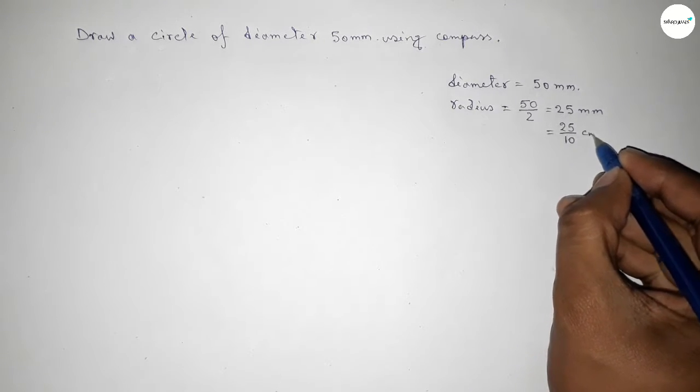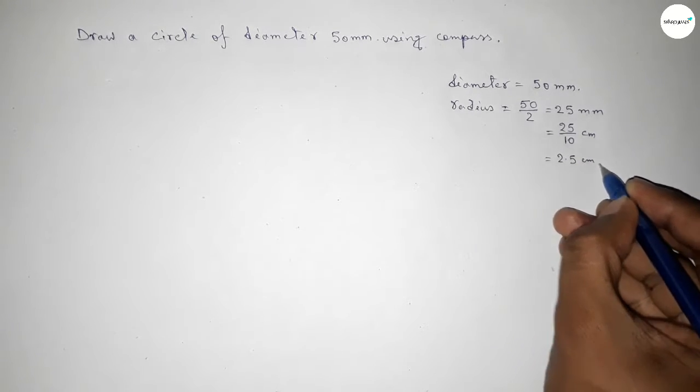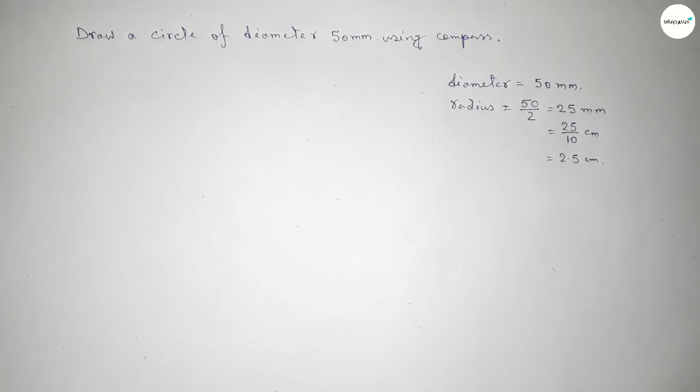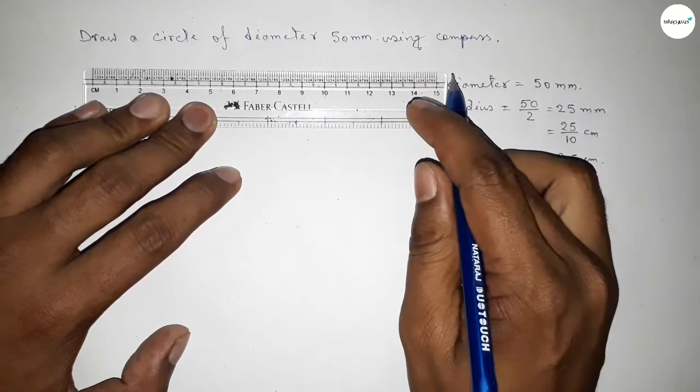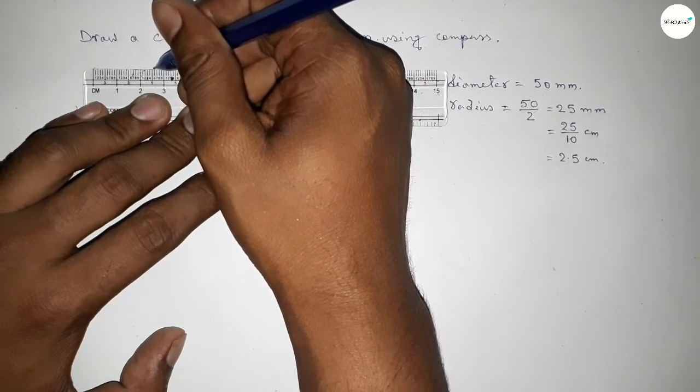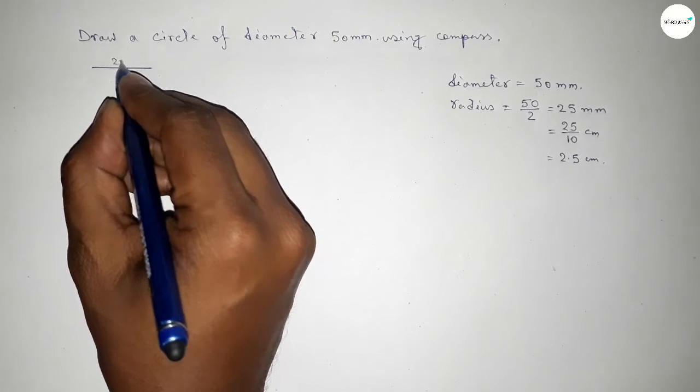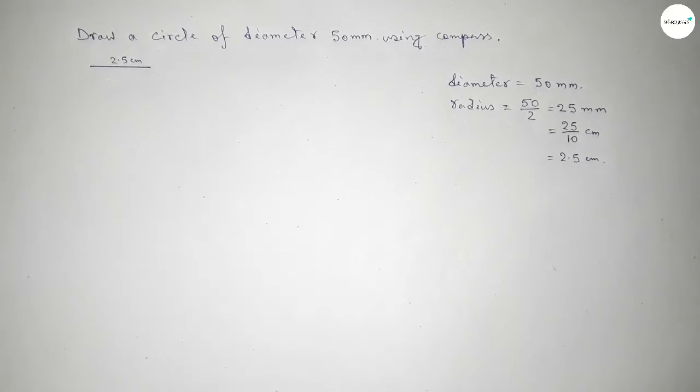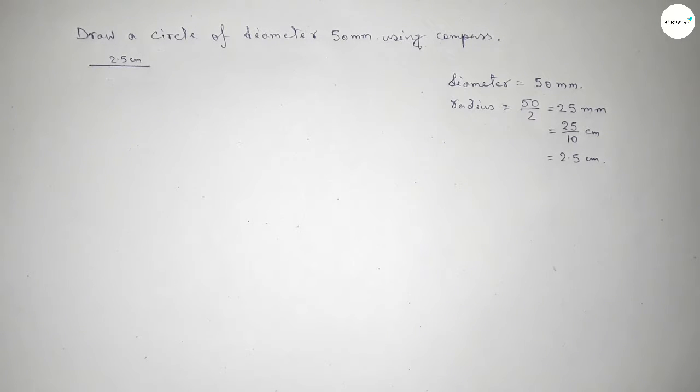So this is 2.5 centimeters. Next we have to first draw here a length of 2.5 centimeters. This is 2.5 centimeters, and this one is a 2.5 centimeter line. Now taking here any point and now taking this length.